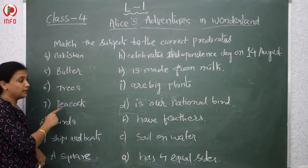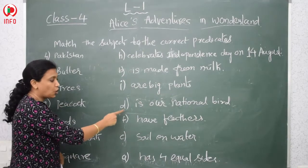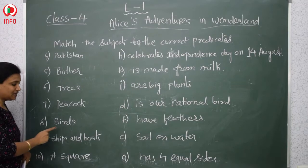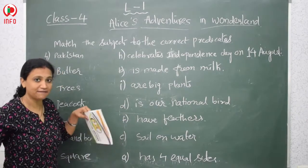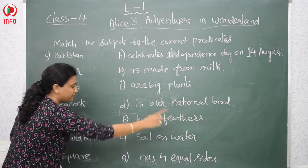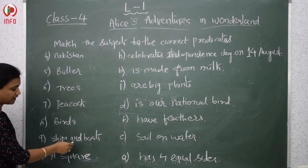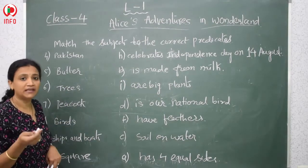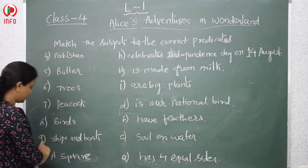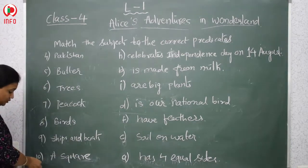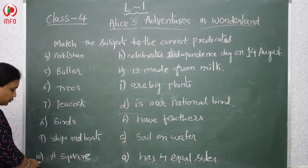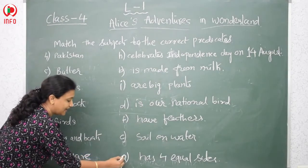Next is peacock — the seventh one — and we are matching it with option D, because peacock is our national bird. The eighth one is birds. Birds have feathers because they fly, so we are matching number eight with option F. Ninth is ships and boats, which sail on the water, so we match number nine with option C. The tenth one is a square — a square has four equal sides — so we match number ten with option A.